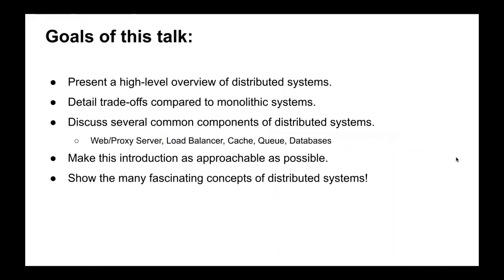The goals of this talk are: first, to present a high-level overview of distributed systems; give some trade-offs compared to typical monolithic systems; and then go into several common components that you might see in a distributed system — things like a web or proxy server, a load balancer, a cache, a queue, and databases. Things that in software engineering you've probably heard of but just maybe don't know how they fit into a system yet. I really want to make this introduction as approachable as possible and show many of the fascinating concepts of distributed systems.